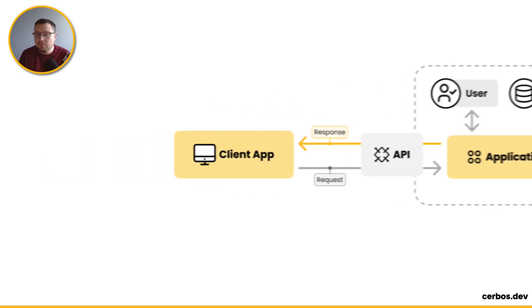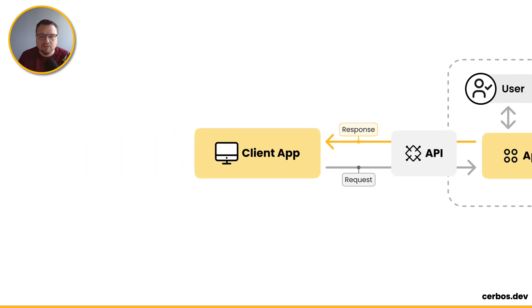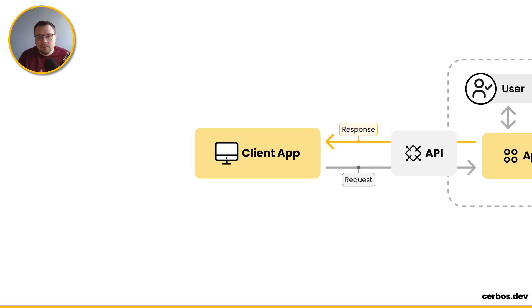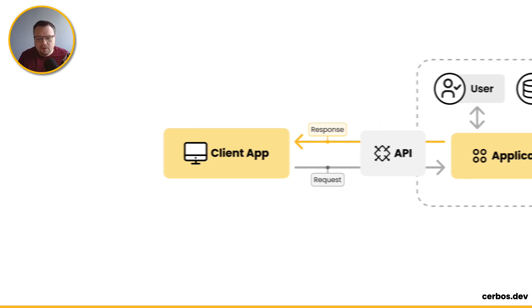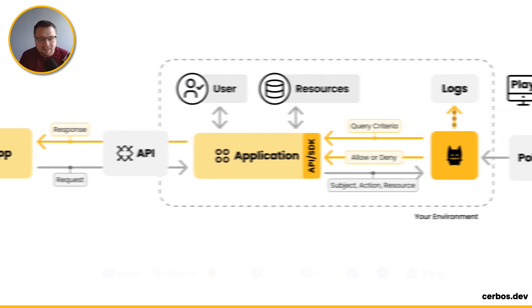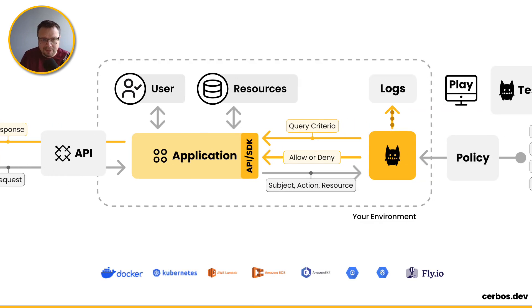So it all begins with your client application. This could be a web app, could be a mobile app, it could be a service account hitting an API, but there's some client making a request to your system. That request will come in through typically your API gateway and into your environment.